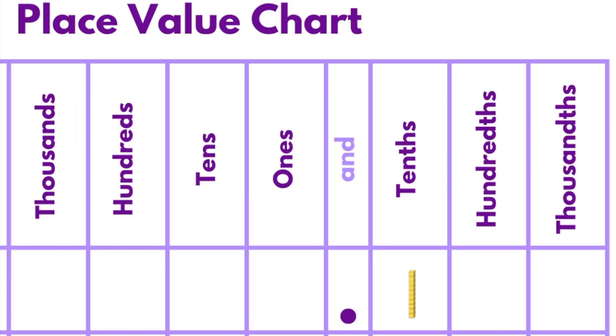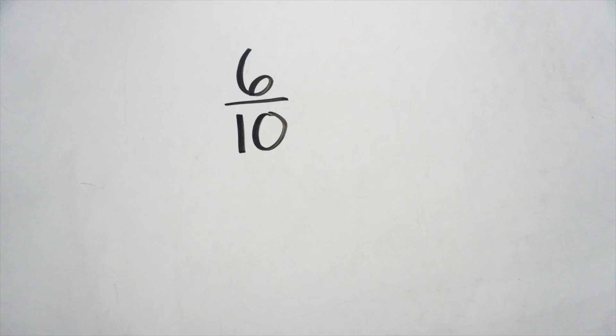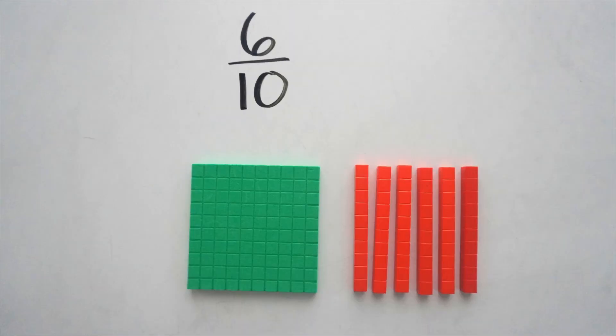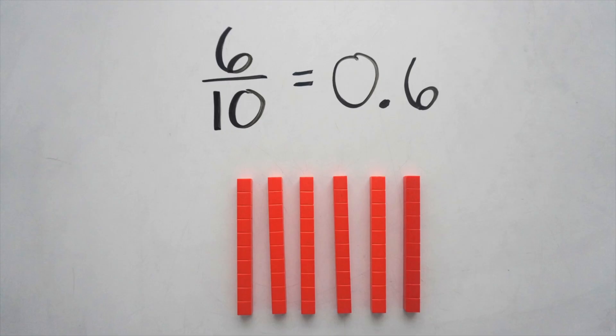Students can use rods to represent tenths and units to represent hundredths, then compare both to the flat that represents one whole. Given a number of tenths and hundredths written as a fraction, students can model with the blocks and write the decimal version.